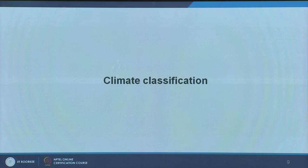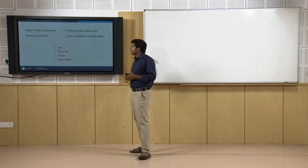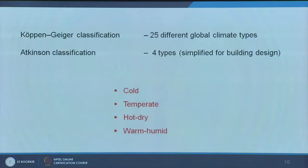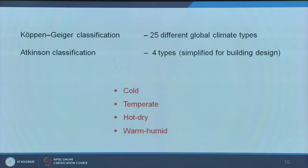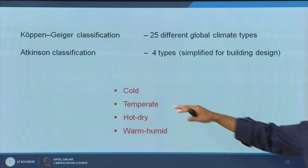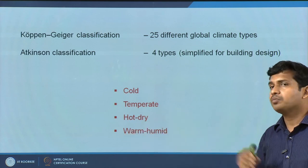Keeping this in mind, let us look at climate classification. The most commonly referred international classification is the Köppen classification. Initially it had 25 different climate types, but it was later extended and there are many versions. As far as building applications are concerned, we typically look at Atkinson's classification, which has four major climate types: cold, temperate, hot and dry, and warm and humid.